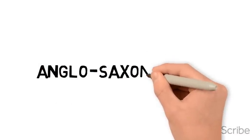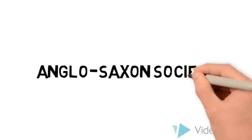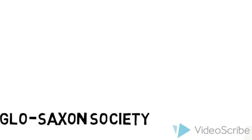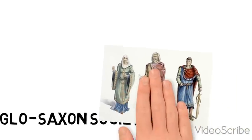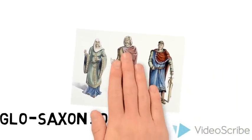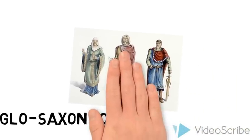This is a short film about what English society was like a thousand years ago, when the Anglo-Saxons ruled the country.